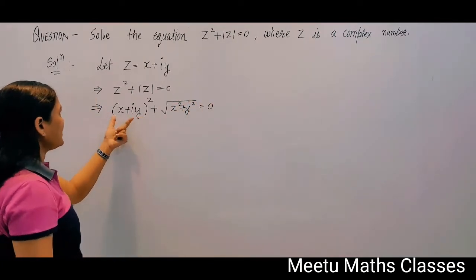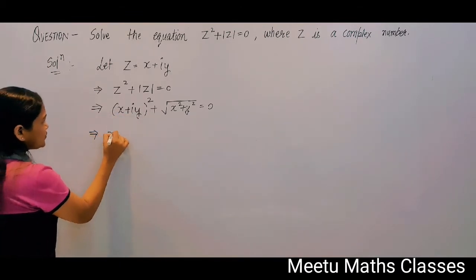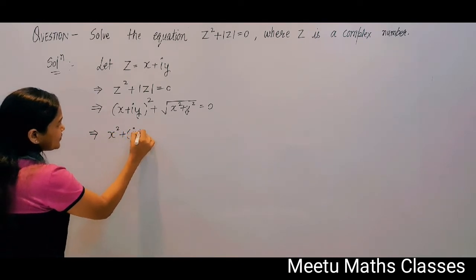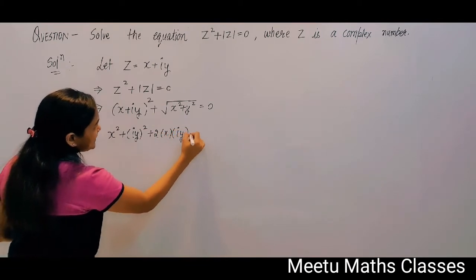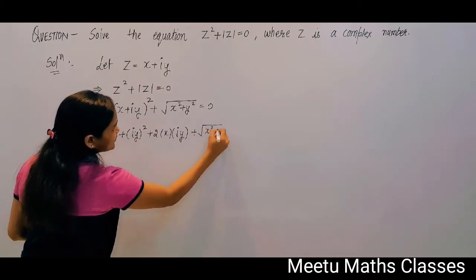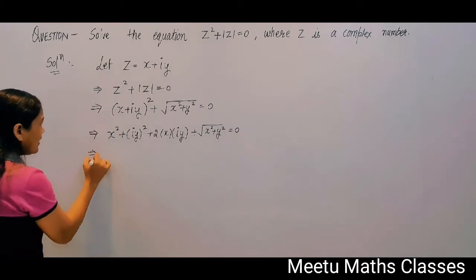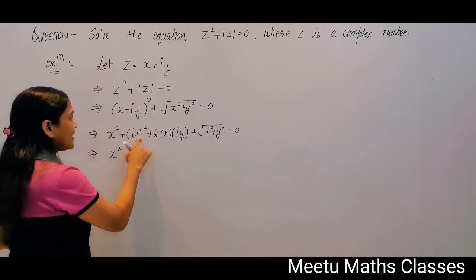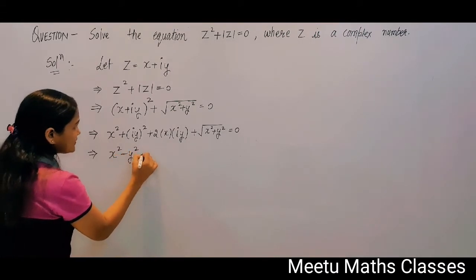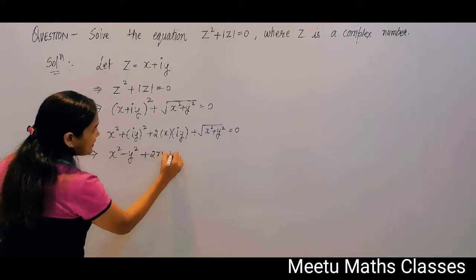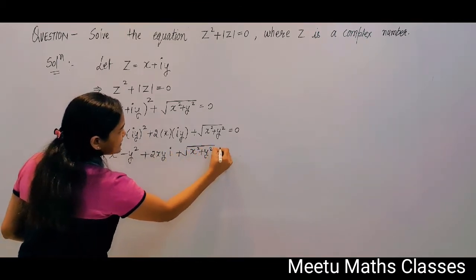Squaring using (a + b)² = a² + b² + 2ab, we get x² + i²y² + 2xy·i + √(x² + y²) = 0. Since i² = −1, this gives x² − y² + 2xy·i + √(x² + y²) = 0.